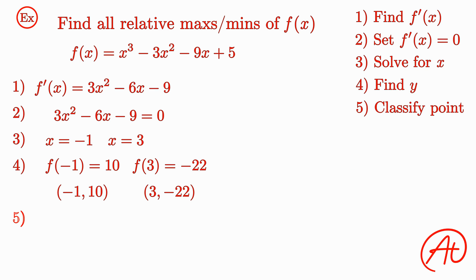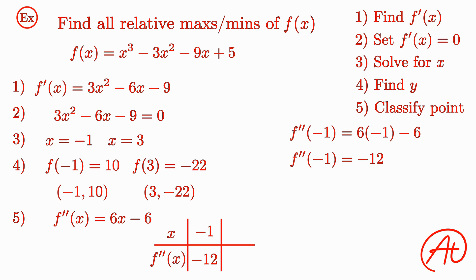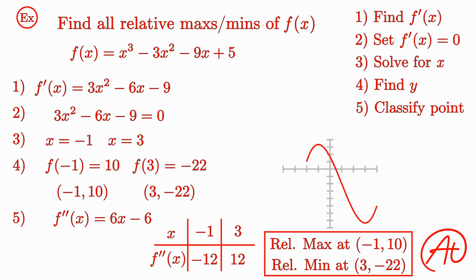To classify each of these points, let's use the second derivative test. Taking the derivative of our first derivative, we find that the second derivative is 6x minus 6. Plugging in our first x-value of negative 1, the concavity of the function at this point is negative 12. Because this is negative, the graph is concave down and (negative 1, 10) must be a relative maximum. Then, plugging in x equals 3, the second derivative is positive 12 at this point. Because this is positive, the graph is concave up and (3, negative 22) must be a relative minimum. If we were to graph this curve, we would find that we are exactly right.